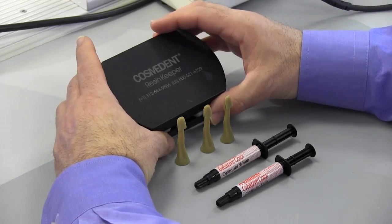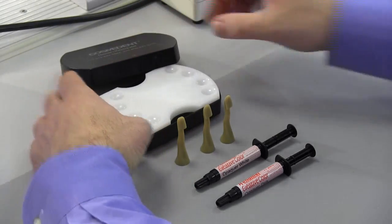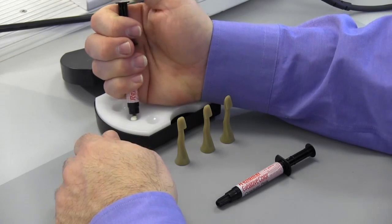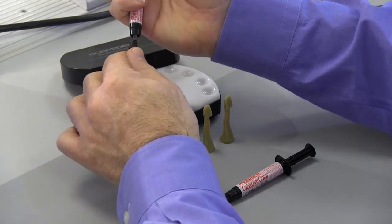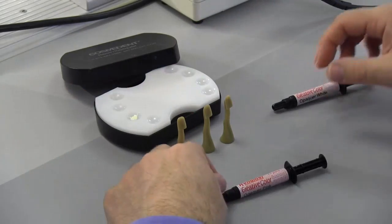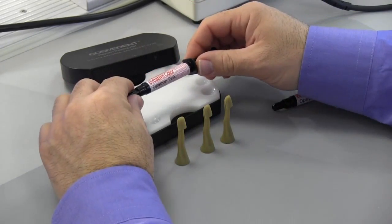We're going to first start by putting our material on our Resin Keeper, which is a nice, light sealed box that keeps the material from setting as you work. You can see we're placing the white opaque first, and then we're going to place the pink opaque right next to it.